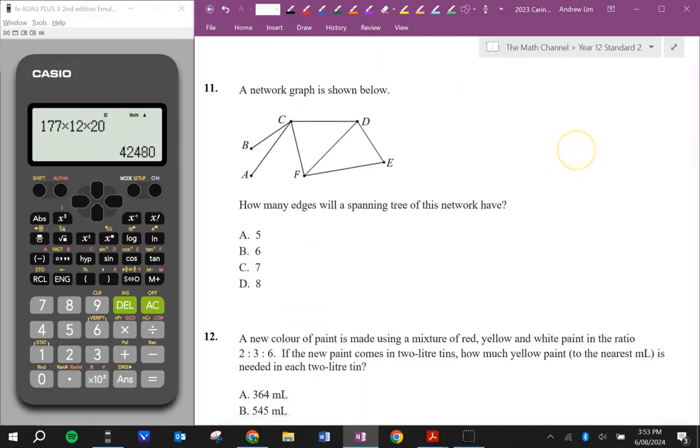Question 11. A network graph is shown below. How many edges will a spanning tree of this network have? So a spanning tree will always have one less edge than there are vertices. So we've got one, two, three, four, five, six vertices. So it will have five edges. Let's just double check this. One, two, three, four, and five. That's enough for it to be a spanning tree.